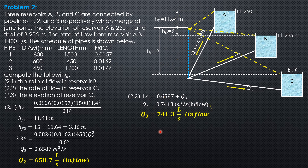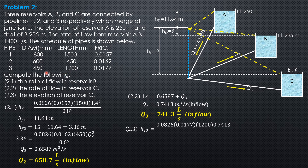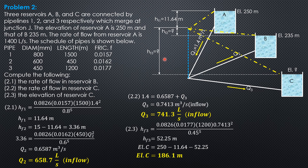Substituting into the head loss formula: HF3 equals 0.0826 times friction factor 0.0177 times length 1,200 times 0.7413 squared, over 0.45 to the fifth. So HF3 is 52.25 meters. Finally, the elevation of reservoir C is 250 minus 11.64 minus 52.25, giving an elevation of reservoir C of 186.1 meters. That's it for this problem.